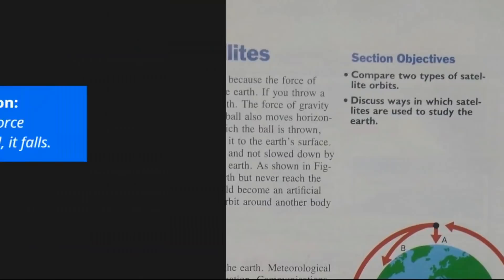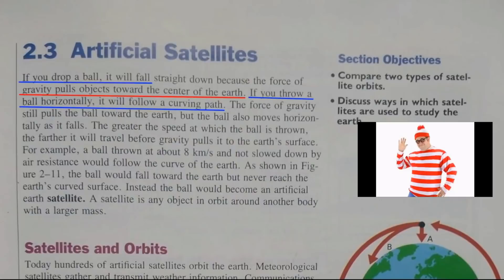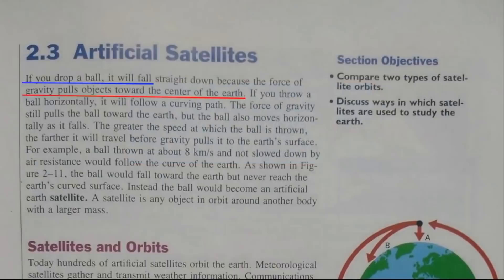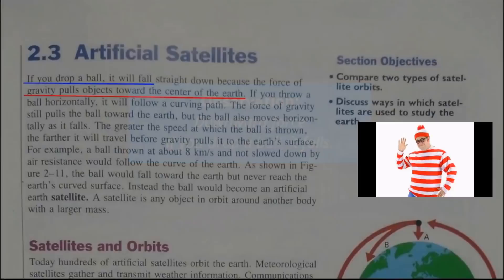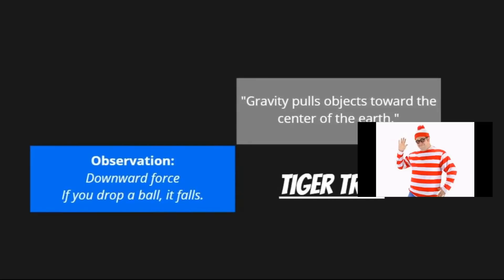If you drop a ball, it will fall. That is an observation of downward force. See, boys and girls, he does observe gravity, even if he calls it by a different name. Gravity pulls objects toward the center of the Earth — that is a tiger trap, because we don't see any observation supporting that claim. Okay kids, stop giggling. Yes, we all heard him say that there was a downward force, then say that there is no evidence of a downward force. Oopsies.